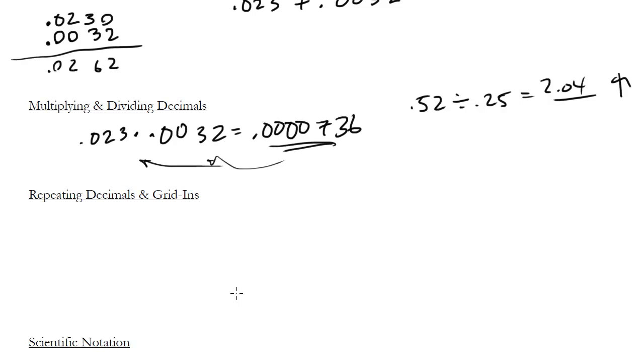For repeating decimals, this just matters for gridding in. Let's say you get 1 third as your answer. I would actually recommend you grid this in in your four spots as 1 over 3, just to avoid any issues. But in theory, you could grid this in as a decimal.